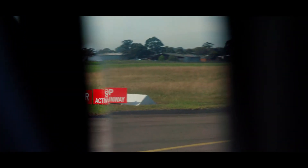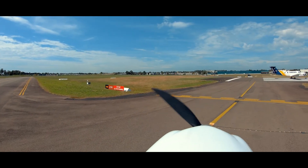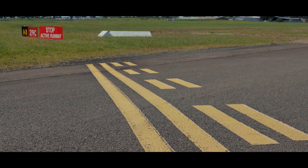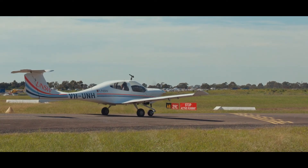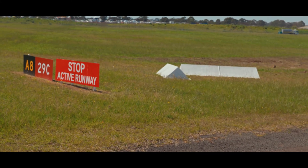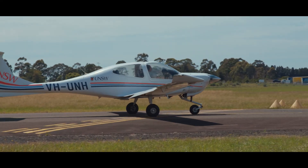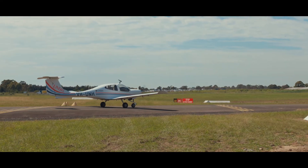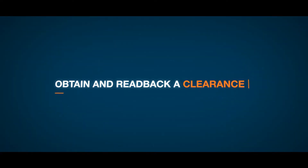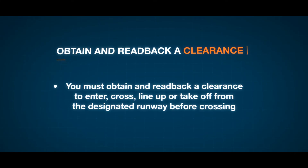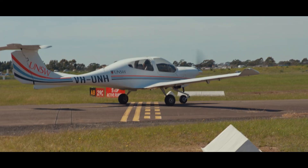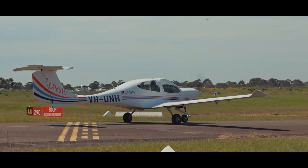As you approach the holding point, you will see a marking pattern consisting of two or more yellow lines, some of which are solid and some of which are dashed. These are the runway holding position markings. Holding points will not be aligned with the sealed surface of the runway — they will be set back to be in line with the gable markers. When issued a clearance to taxi to a holding point, or when instructed to hold short of the runway, always stop before the first solid line of the runway holding point marking. You must obtain and read back a clearance to enter, cross, line up or take off from the designated runway before crossing from the solid side to the dashed side of a runway holding point at any aerodrome when a control tower is operating.